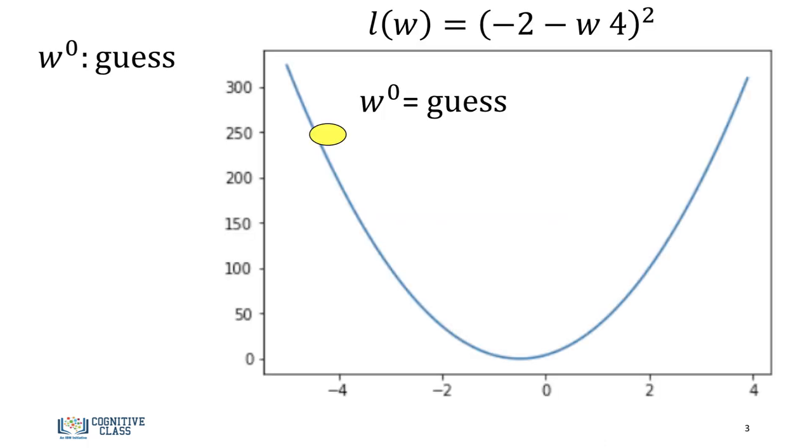So in gradient descent, we basically start off with a random guess for our parameter. And in this case, we'll use a subscript 0 to indicate that it's our first guess. We want to find the value of the parameter that minimizes the function, so we want to move in this direction.